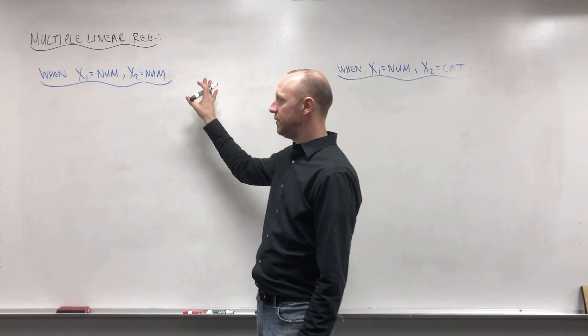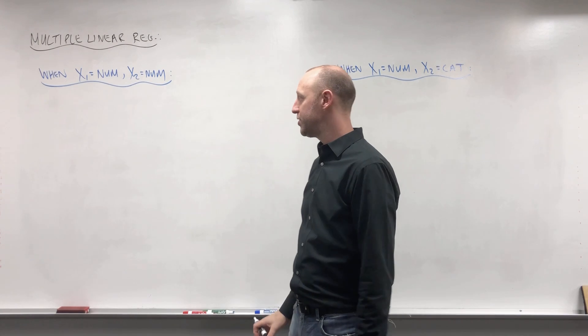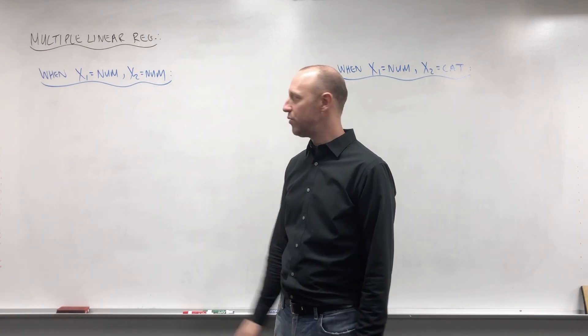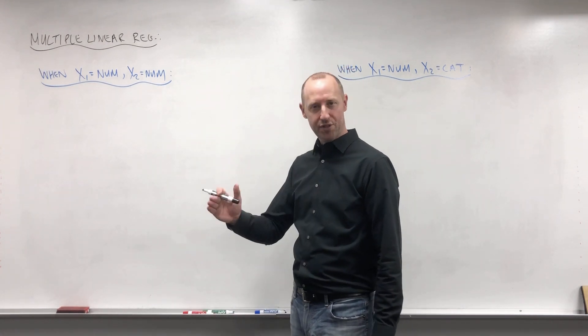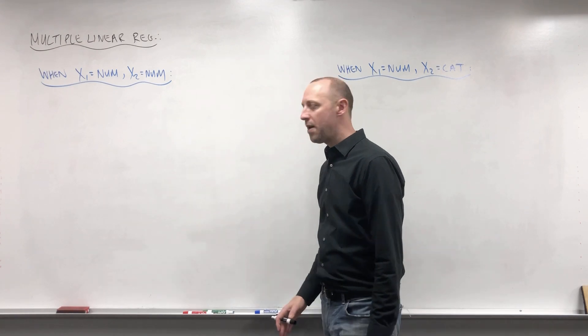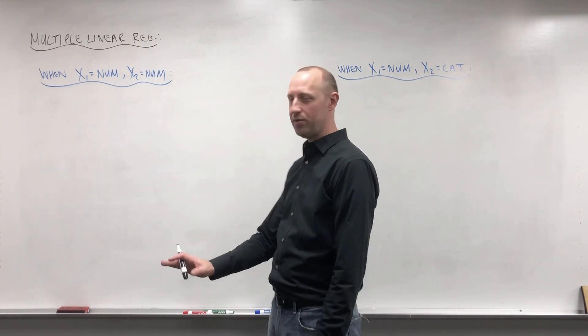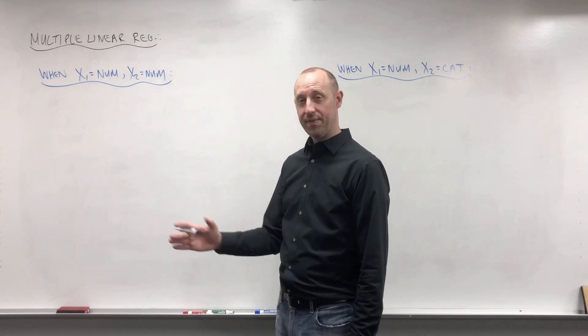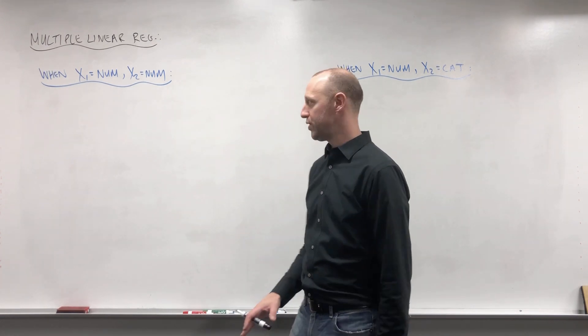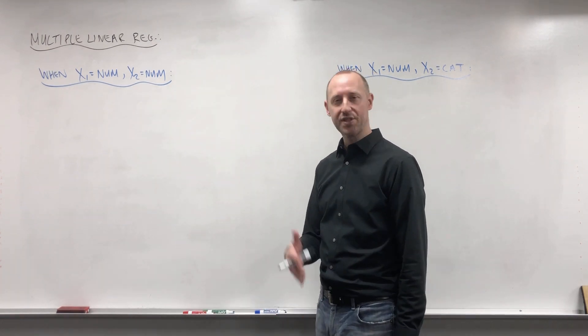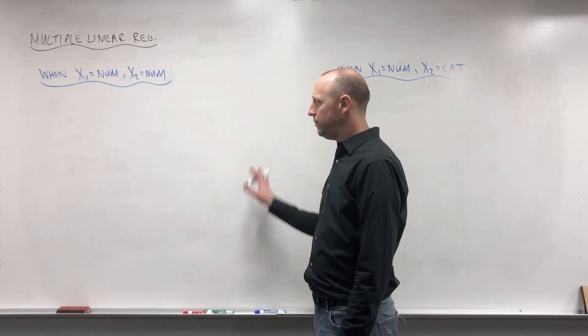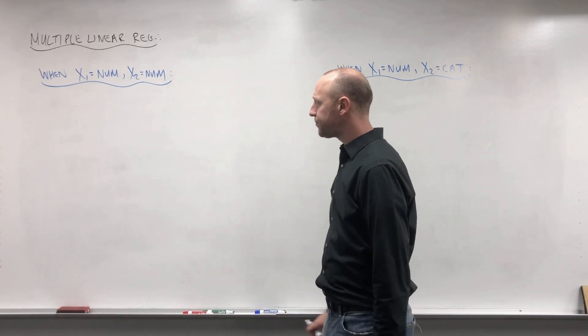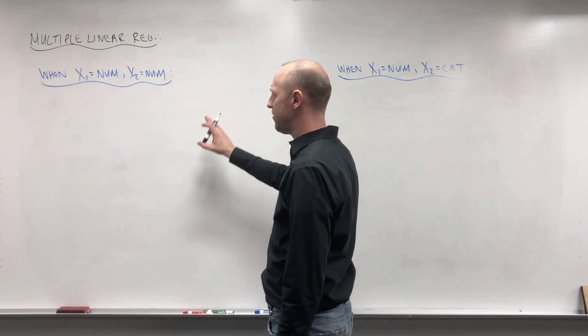Multiple regression has all these same assumptions as simple linear regression, so the relationship between the numeric X's and the Y's is linear, then we have constant or equal variance, normally distributed around the line, and independent observations. When we check those assumptions, it's the same. If say non-linearity is not met, the solutions we have to address that are all the same. We can try transforming variables, including polynomials, categorizing. So really it's an extension of simple linear regression.